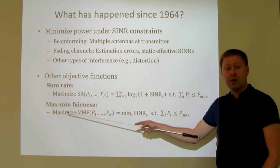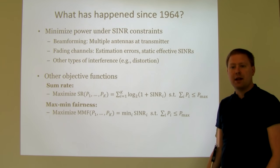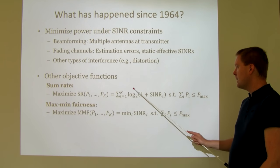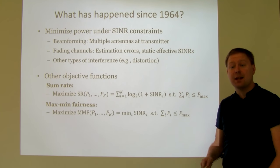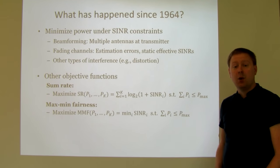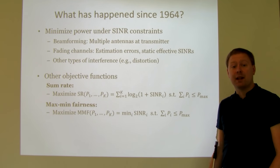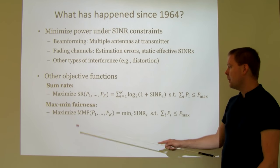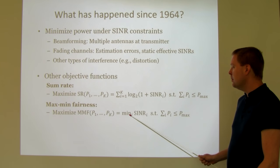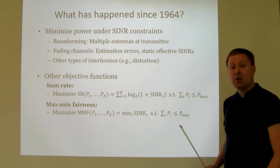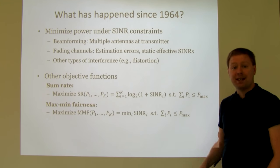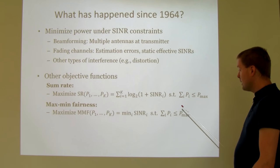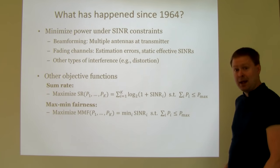Another approach is max-min fairness: ensuring the system is perceived as fair by users. When maximizing the sum of user performance, there is no guarantee any particular user gets a certain level. In the max-min fairness case, you make sure everyone gets exactly the same performance — maximizing the minimum SINR over all users. By doing that, maximizing the minimum always leads to everyone getting exactly the same SINR. This is done by selecting transmit powers subject to a power constraint similar to the sum rate case.